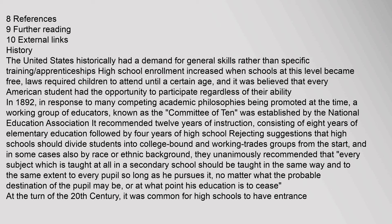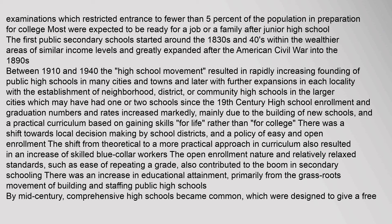They unanimously recommended that every subject taught in a secondary school should be taught in the same way and to the same extent to every pupil, no matter what the probable destination of the pupil may be, or at what point his education is to cease. It was common for high schools to have entrance examinations which restricted entrance to fewer than 5% of the population. Most were expected to be ready for a job or family after junior high school. The first public secondary schools started around the 1830s and 1840s.